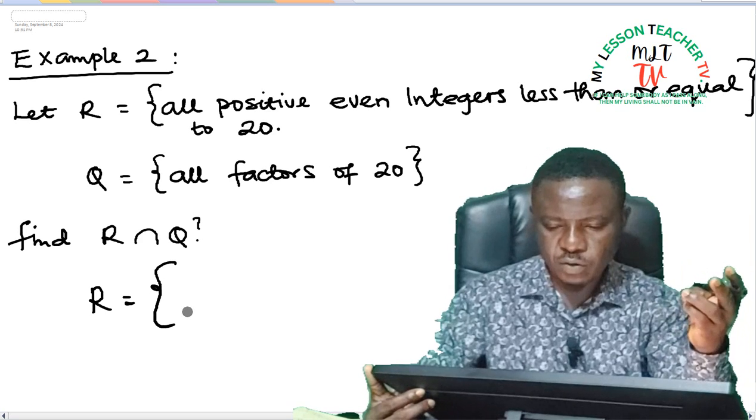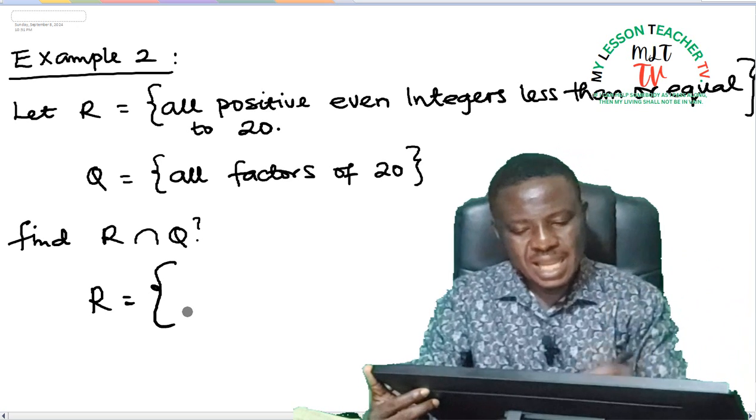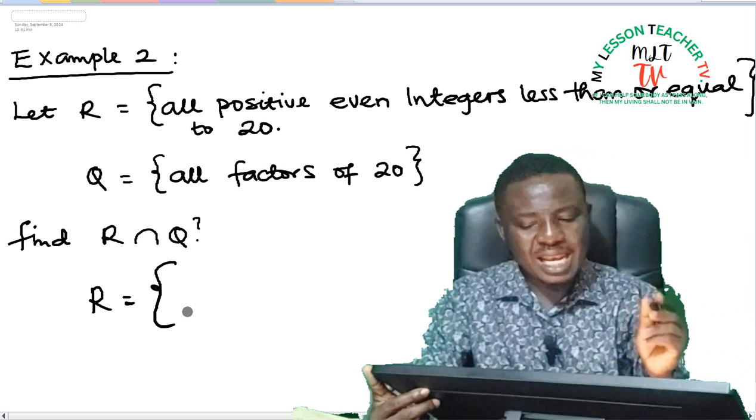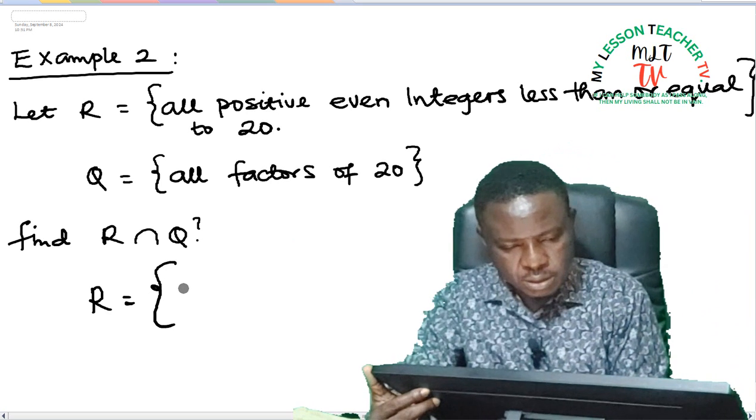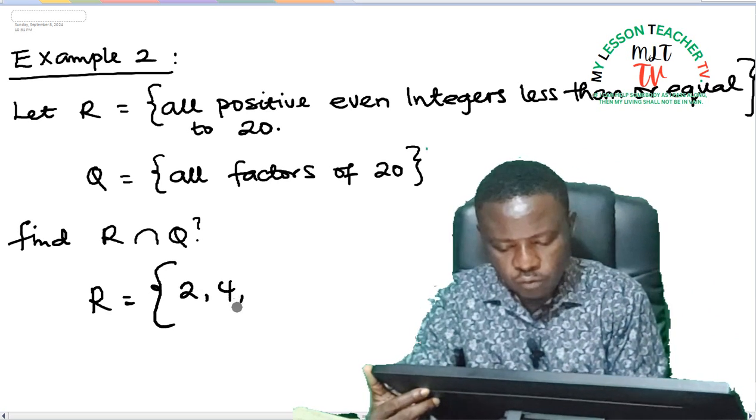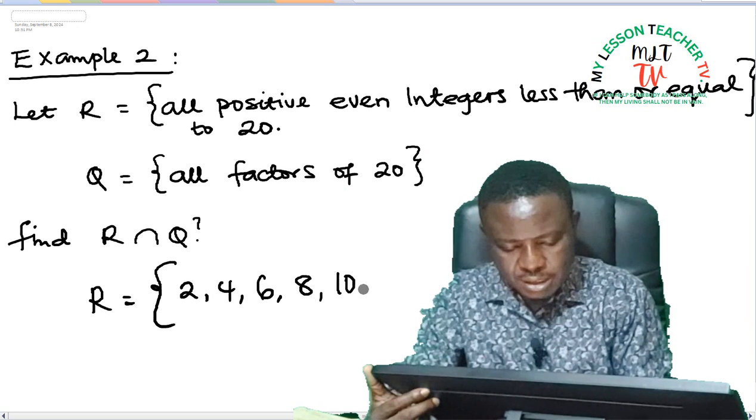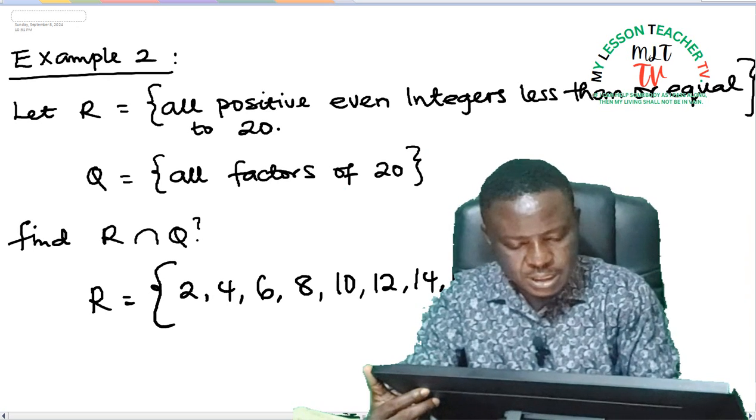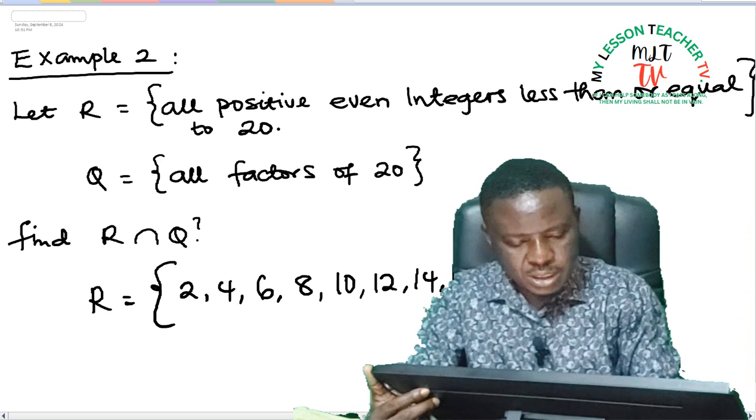So they said all positive even integers—one, they are positive; two, they are even; and they are integers. So we are going to list out all the positive even integers that are less than or equal to 20. So we have them as 2, 4, 6, 8, 10, 12, 14, 16, 18, and 20.